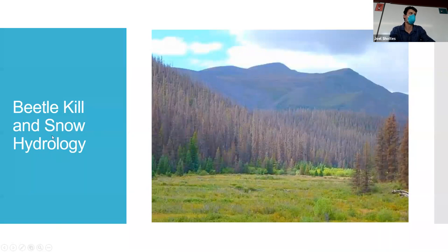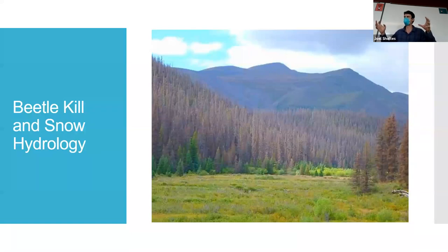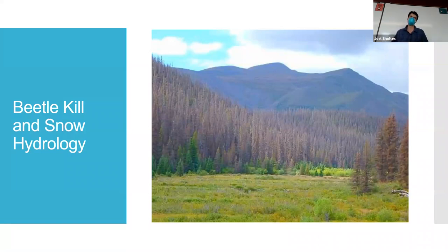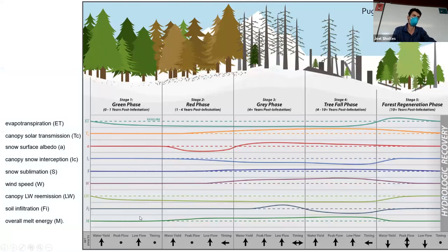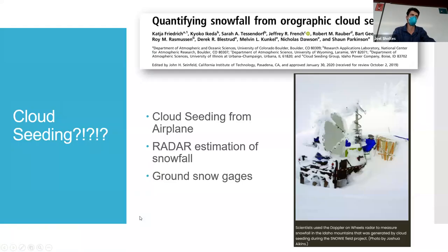Over the last decade there was a really big beetle-kill event affecting almost the entire state. Pine bark beetles naturally live in these trees, but with fewer cold winters and denser forest stands with same-age trees, plus forestry management practices, there was an explosion of beetles that killed hundreds of thousands of acres of trees. That can also influence snow hydrology for many of the reasons discussed.